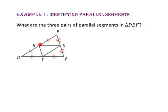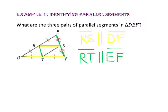Therefore, sides RS, TS, and RT are all mid-segments, so they will be parallel to the side opposite and half as long. Our first set of parallel sides will be side RS and side DF. Our second set of parallel sides would be RT and EF. And our third set of parallel sides would be side TS and side DE.